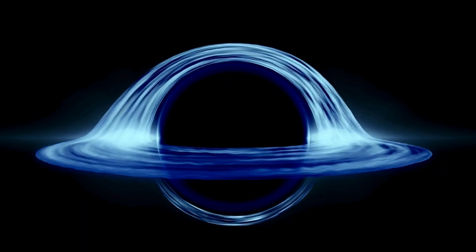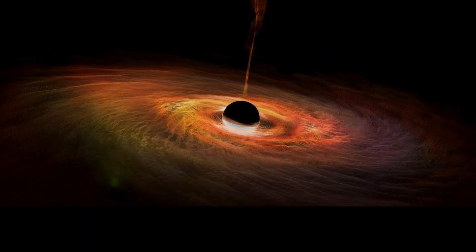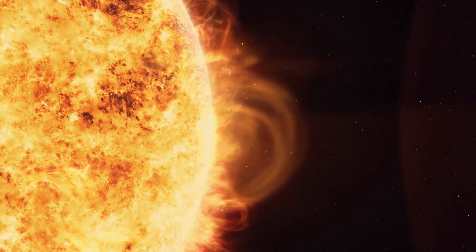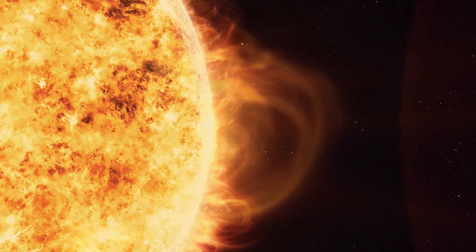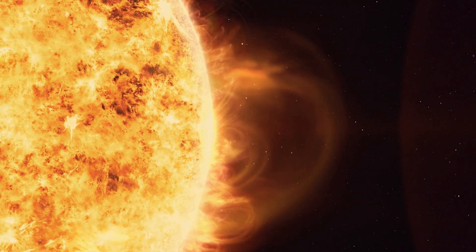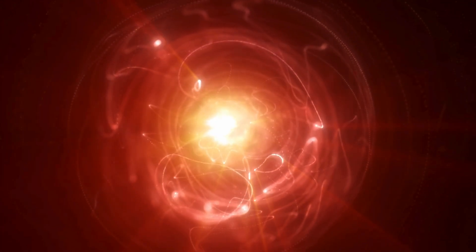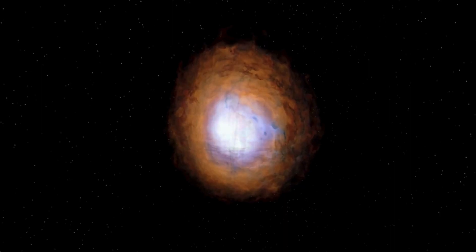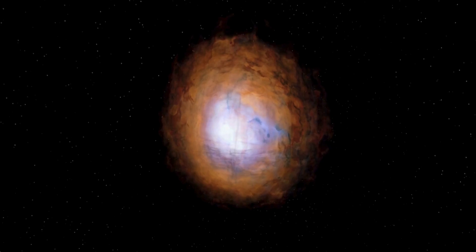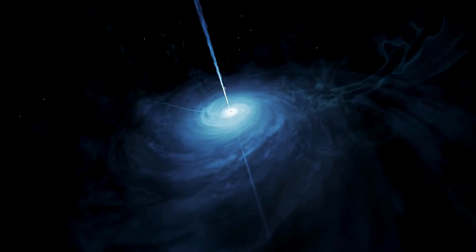So how do black holes come to be? The most common type, stellar-mass black holes, form from massive stars at least eight times the sun's mass. When these stars burn out, their cores collapse, triggering a supernova explosion that flings their outer layers into space. What's left becomes a black hole.